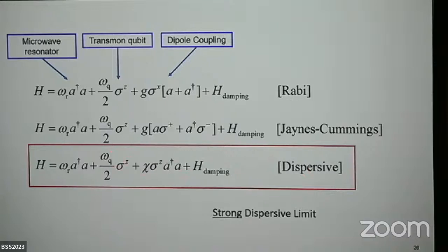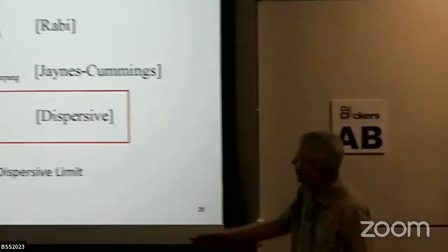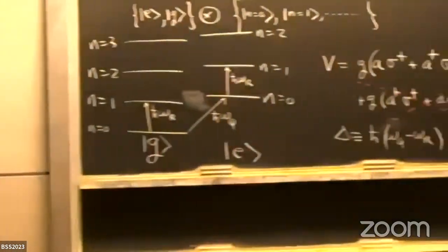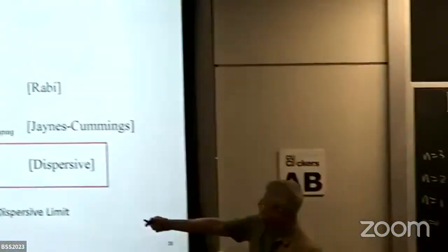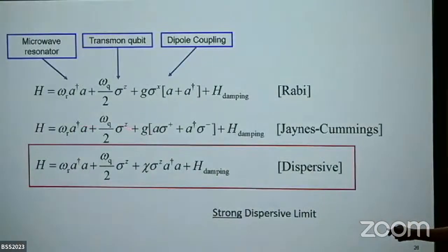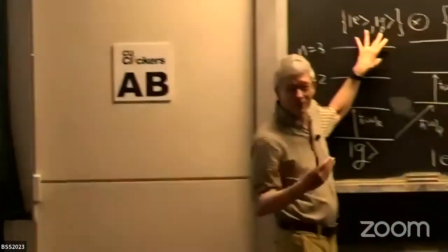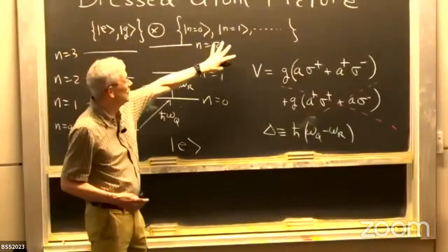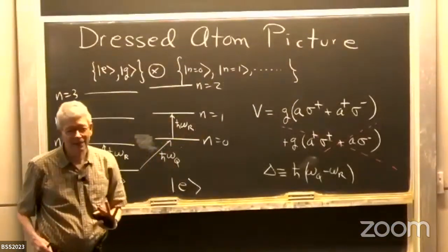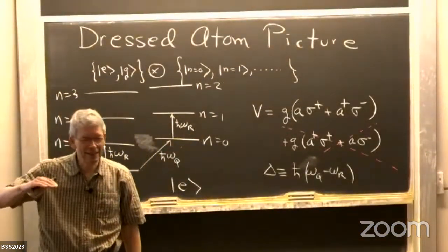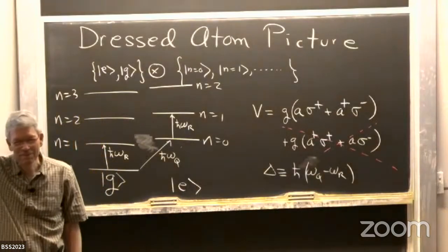Let me explain the dispersive coupling in what atomic physicists call the dressed atom picture. First, think about just the uncoupled terms in the Hamiltonian. The Hilbert space is the span of the qubit states tensored with the span of the oscillator Fock states: 0, 1, 2, 3, 4, 5, 6.